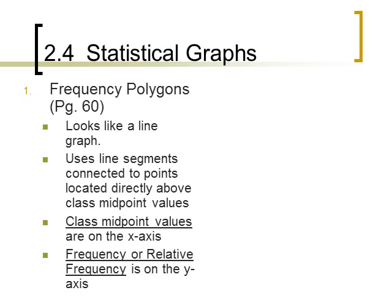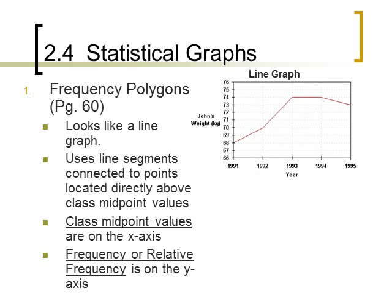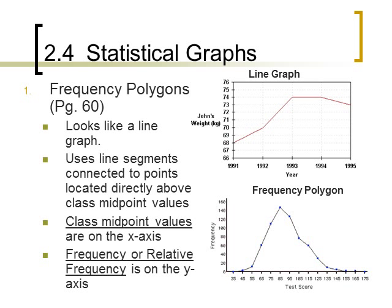You use line segments connected to points located directly above class midpoint values. Here's a frequency polygon. What makes this different from a line graph is that a frequency polygon has to go back and touch the x-axis so it creates a closed-in shape. On the x-axis we plot our midpoint values of each class, and then on the y-axis we plot our frequencies or relative frequencies.